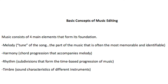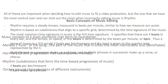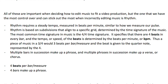All of these are important when editing music, but one of the main things you would need to worry about when editing together music is the rhythm. Rhythm is based on subdivisions that align to a specific grid, and that grid is determined by the time signature of the music. The most common time signature is 4/4, which specifies that there are four beats in every measure or bar, and the tempo or speed of the beats is determined by BPM, or beats per minute.